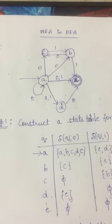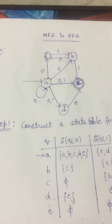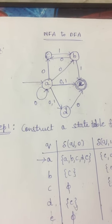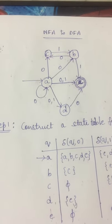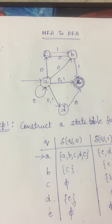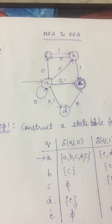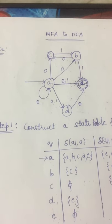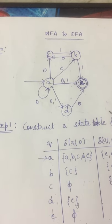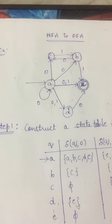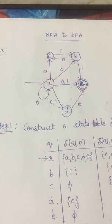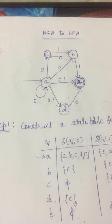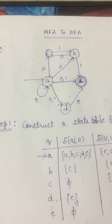Dear students, today we are going to discuss about conversion of an NFA to a DFA. In order to construct a DFA for a given NFA, we have to construct three steps. In step 1, we have to construct a state table for the given NFA diagram. In step 2, we have to construct a state table using subset construction method. And in step 3, we have to construct a state diagram.